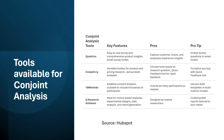Quick Feedback is a tool for rapid feedback — a pro tip is to try before you buy with this tool. 1000minds is an adaptive conjoint analysis tool scalable to thousands of participants, with pre-built templates and built-in customer models. Q Research Software is ideal for choice-based analysis, experimental designs, data analysis, and report generation — it is majorly designed by market researchers, with customizable reports tailored to your needs.